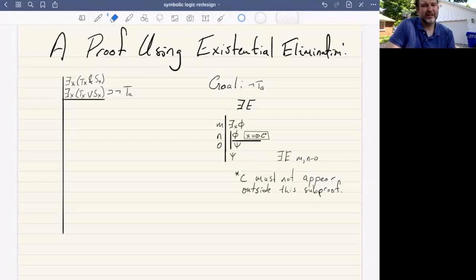Okay, let's see this rule at work. So here we're given the statement there exists some object X, such that X is T and X is S. And we're also told that if there exists some object which is either T or S, then it follows that it's not the case that A is T. And our goal here is that it's not the case that A is T. So how are we going to do this?